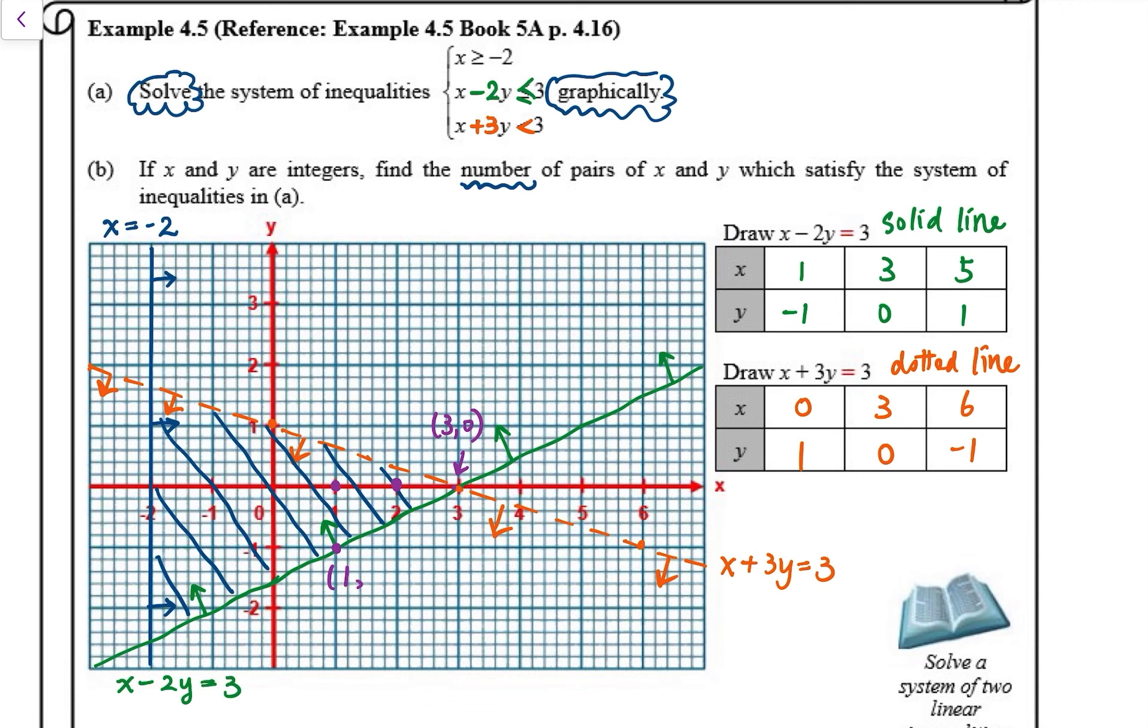1, negative 1 is a solution because it lies on the boundary and it's a solid line. Same as this point, negative 2, 0. So there are altogether 13 pairs for part B.